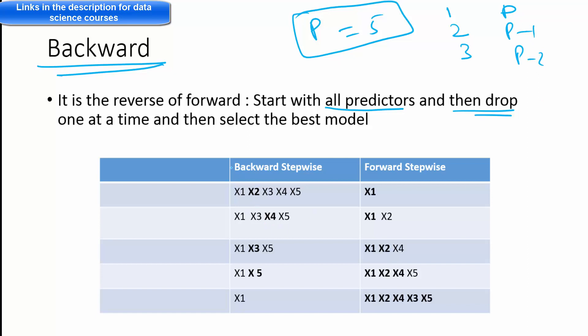So here is a comparison. We have backward stepwise, we have forward stepwise. So you start with all the predictors available. Let's say you have five predictors, X1, X2, X3, X4, X5. Now, here in the first step, we found out that X2 is a bad variable or not so important or the least important variable. It gets dropped here. So we have X1, X3, X4 and X5.